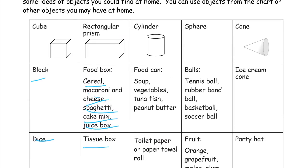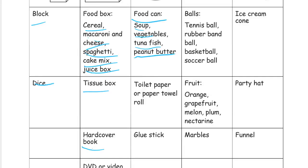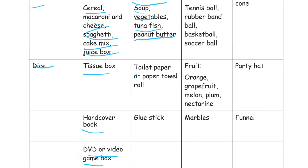For cylinders, food cans are usually cylinders — tuna cans, they don't have to be big cans. A plastic jar of peanut butter is usually a cylinder. Soup cans and cans of vegetables are all good. A roll of toilet paper is a cylinder. Wheels are usually cylinders too, and a glue stick is actually a cylinder.